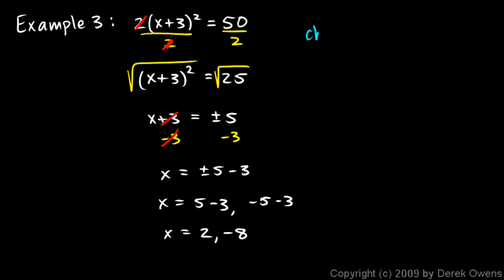Okay, I'm going to check these. I'm going to check 2. To check this solution, I'm just going to take this 2 and plug it back into my original equation. The original equation is 2 times x plus 3 squared equals 50. I'm going to take that equation and rewrite it, but instead of the x, I'm going to put in a value of 2.